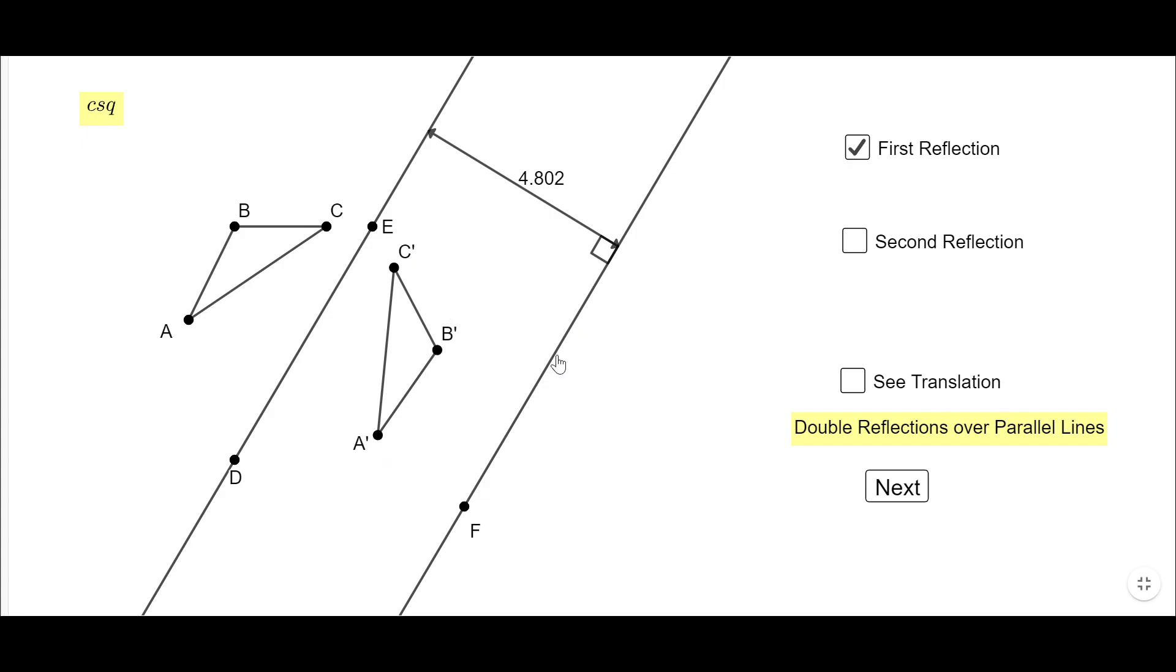And now I'm going to do a second reflection. I'm going to reflect this triangle A-B-C-prime over the line containing points F. Look at here what we get. We get A-second, B-second, C-second. This is the result of reflecting this triangle.